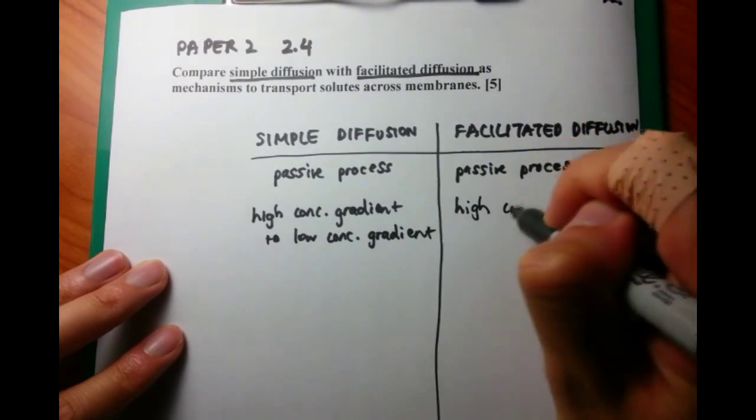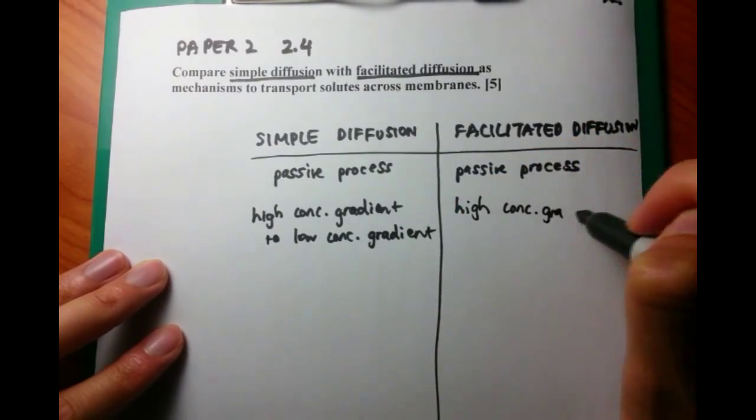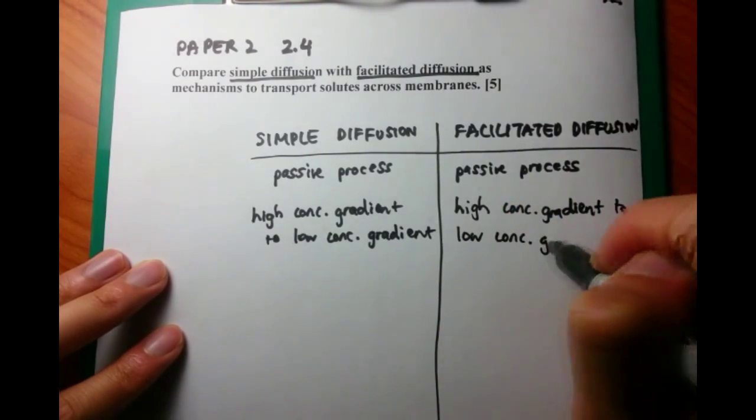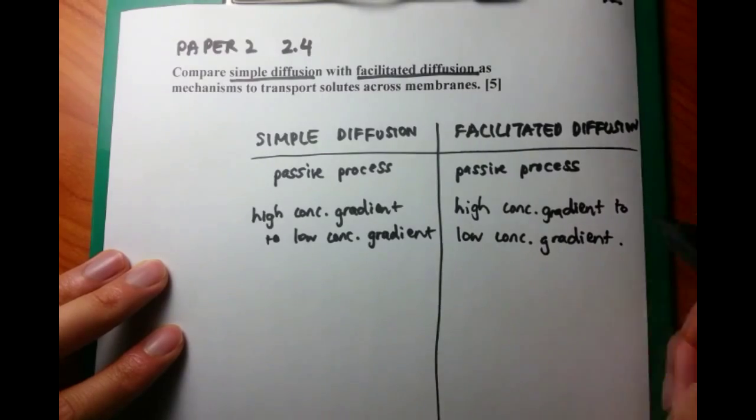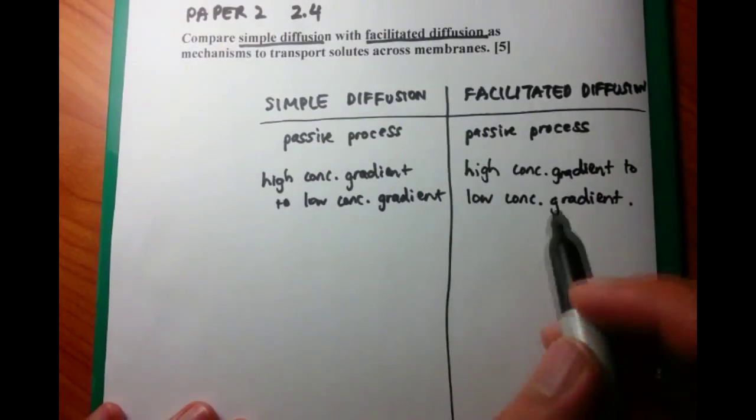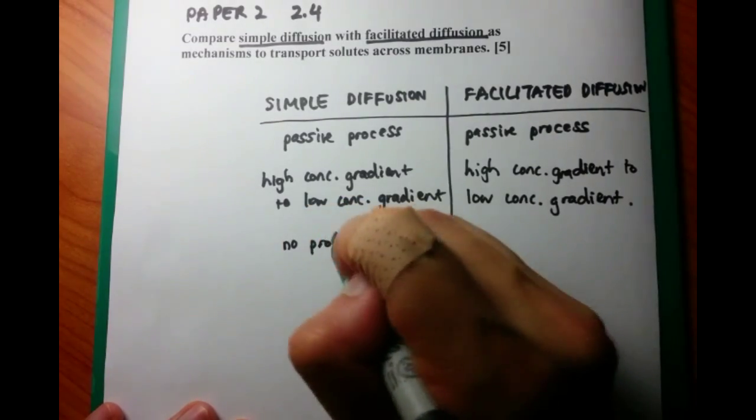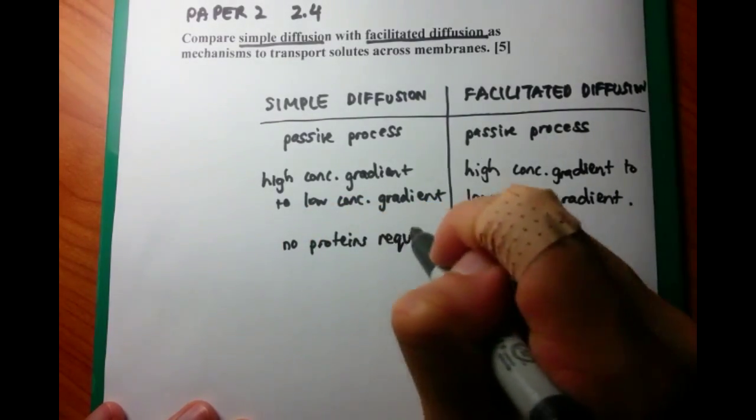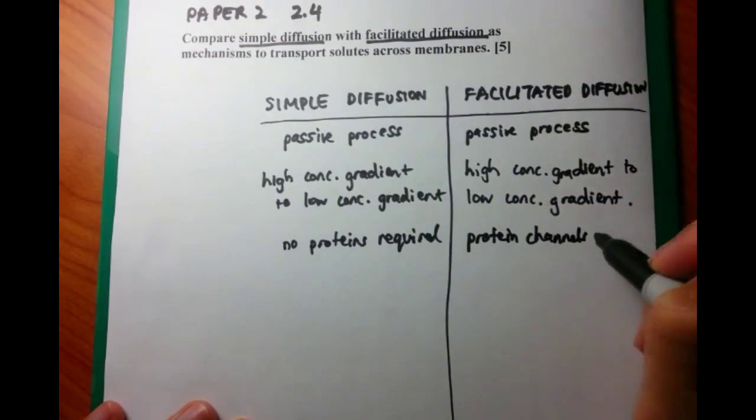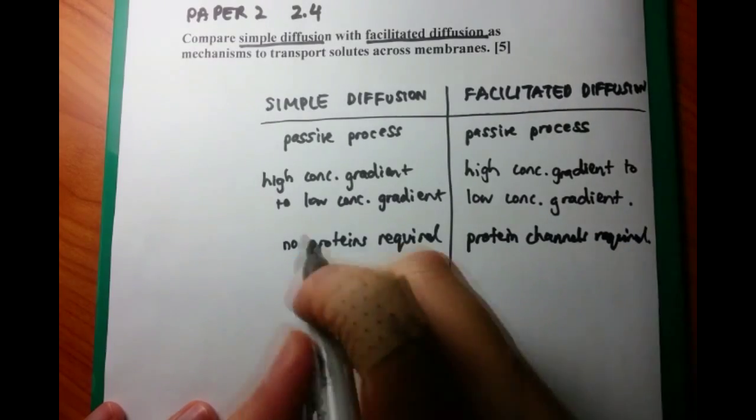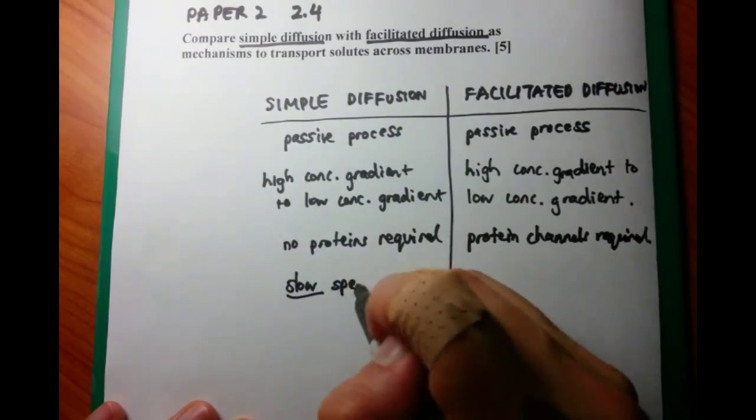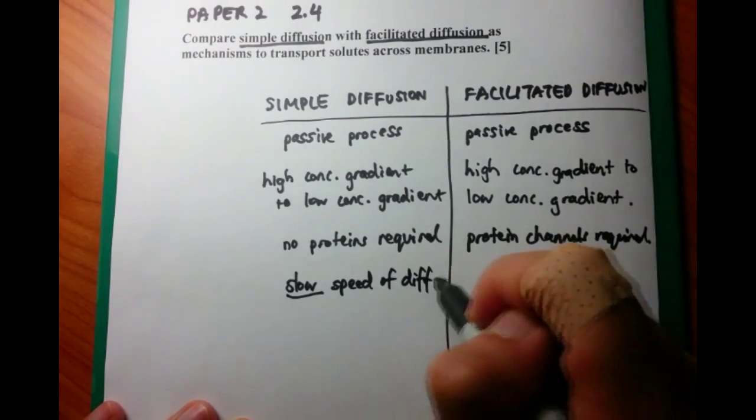Now, the next thing that we're going to talk about is a difference. Simple diffusion is diffusion just from one area to another area just because. And in this case, there are no proteins required. It happens automatically, so to speak. Whereas facilitated diffusion, the difference here is that it requires a protein channel because it's going through a membrane. The molecules which go through facilitated diffusion, they're too big to just diffuse simply across.